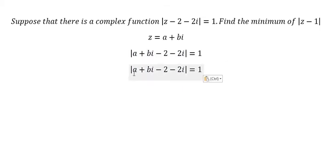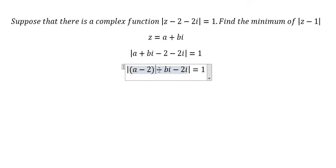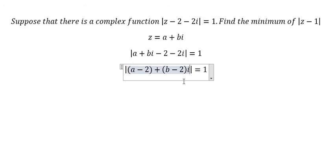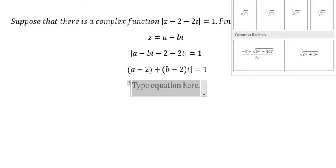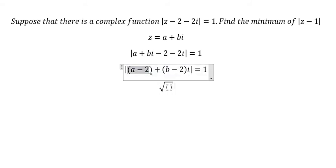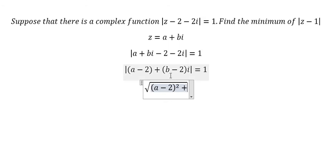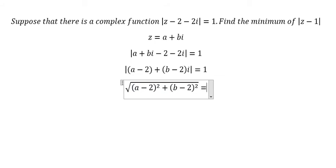We have a minus 2, which is the real part, and b minus 2, which is the imaginary part. The formula gives us the square root of (a minus 2) squared plus (b minus 2) squared, and this equals 1.